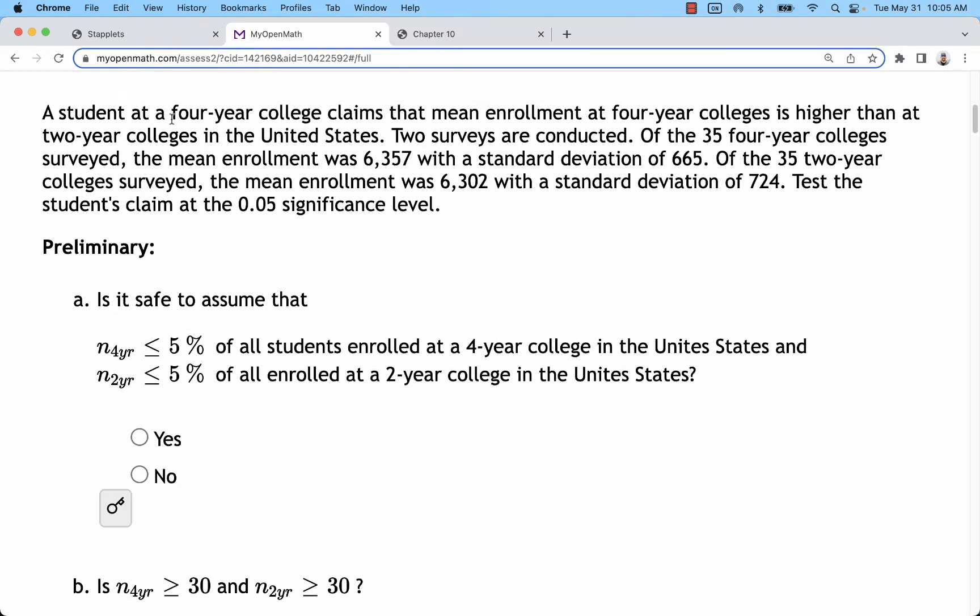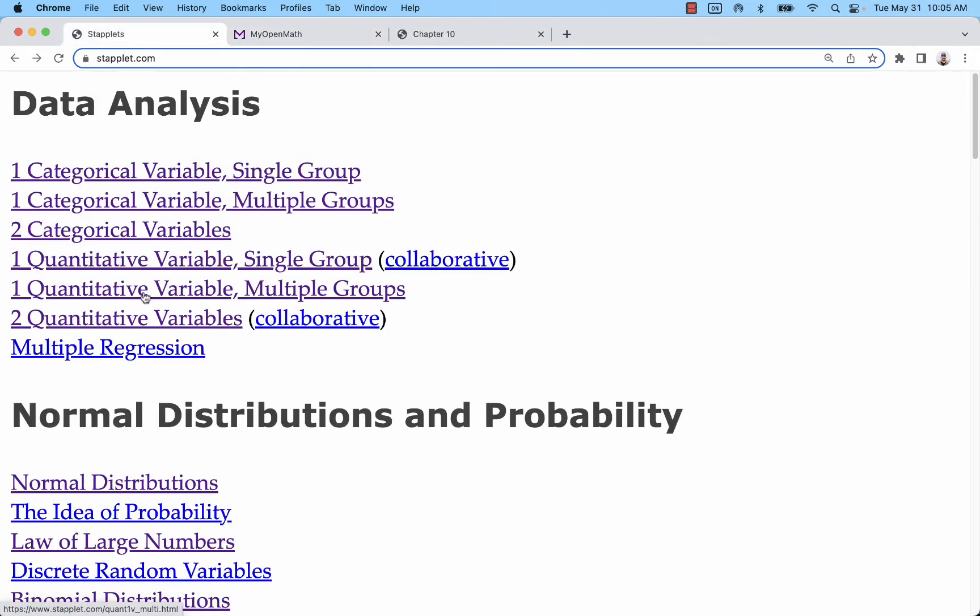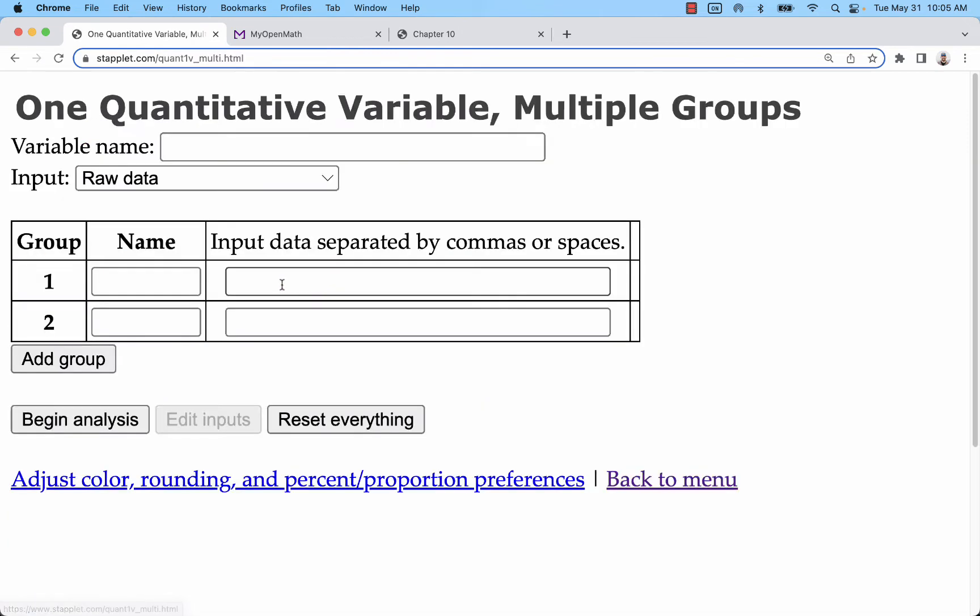So I'm going to break this down real simple and go right into a problem from our homework. Here we're comparing the enrollment at four-year and two-year colleges. So we're measuring the same variable, enrollment, but we want to see if those different populations kind of have different values. So what we need to start with is Statlet.com. In this situation, this is the first section of problems in the homework. We're going to look at one quantitative value variable, but instead of a single group, we'll look at multiple groups now.